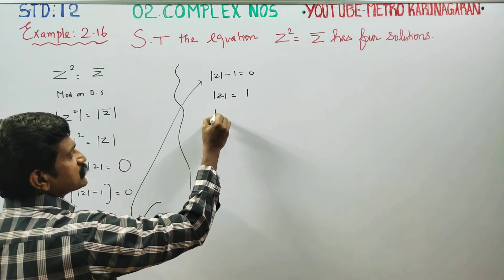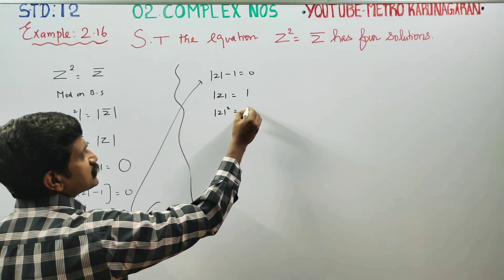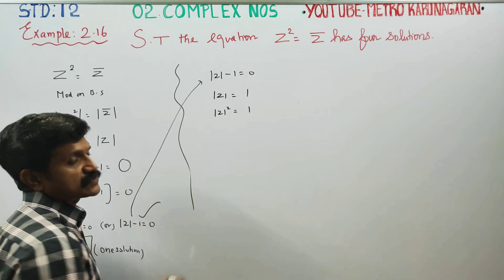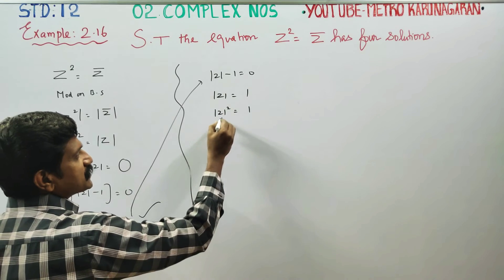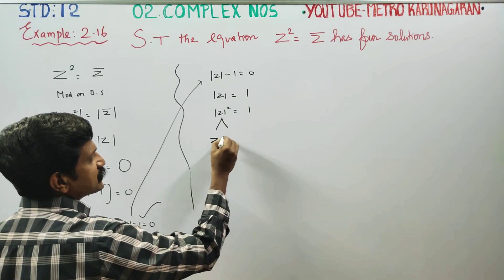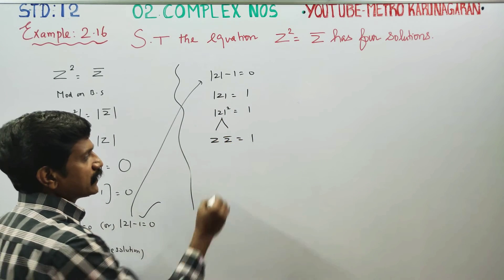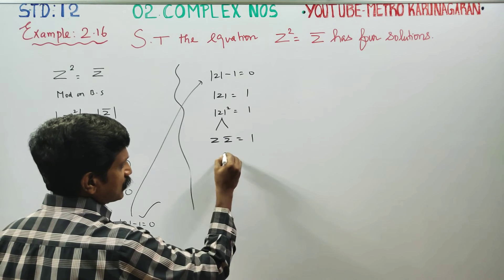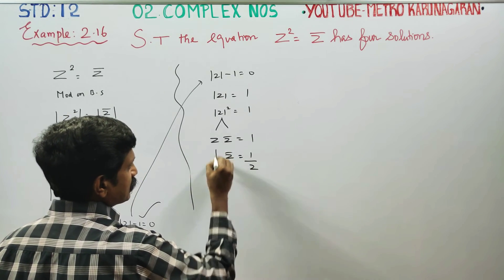Squaring both sides, modulus of Z squared is equal to 1. Modulus of Z squared can be written as Z into Z-conjugate is equal to 1. Therefore, Z-conjugate is equal to 1 by Z.